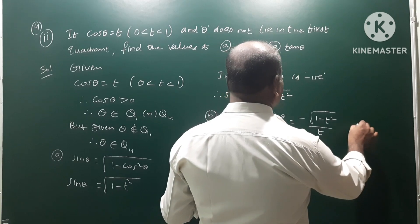In Q4, tan θ is negative. Tan theta is less than 0 in Q4. Tan theta is negative, minus square root of 1 minus t square by t. Therefore, that is the value of tan θ.